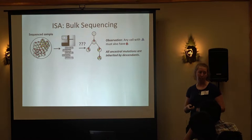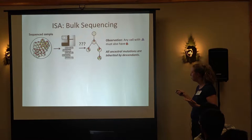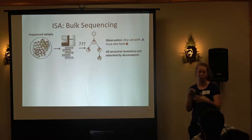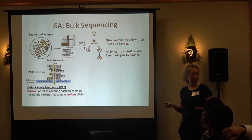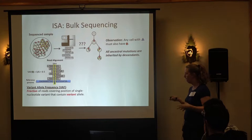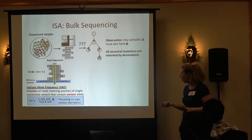If we think about bulk sequencing data — sequencing genomes from a whole collection of cells that will have different sets of mutations — any mutation that is ancestral to another will always appear in any cell that has that descendant mutation, since we assume no mutations are ever lost. We take our reads, align them to a reference genome, and for a single nucleotide variant we can count the fraction of reads that have the variant allele — this is our variant allele frequency (VAF). Assuming no copy number alterations, the VAF is proportional to the fraction of cells in your sample that have that mutation.